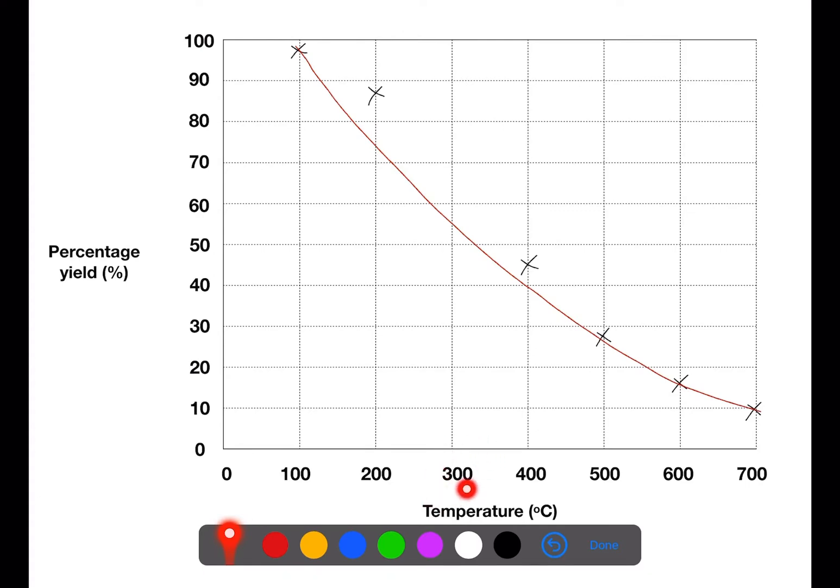We did not have a percentage yield for 300 degrees. However, to make sure our scale goes up evenly, we need to be able to put that in. We've then plotted the points for each of the temperatures. And again, we've not joined from point to point. We've joined them together with a smooth freehand curve.